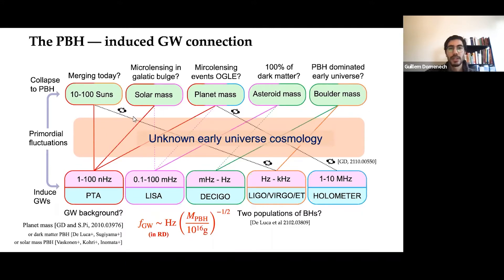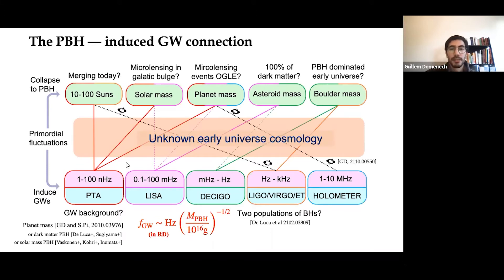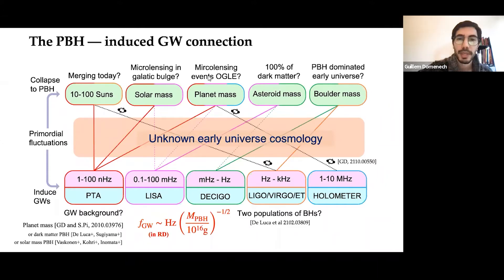But all this connection depends on the unknown early universe cosmology. For example, focusing on the possible background seen by pulsar timing arrays, if the universe was dominated by an early matter phase, I have shown with Tsipey that it could explain the planet-mass primordial black holes seen by OGLE. So the connection between GW signals and PBH masses has a strong dependence on the unknown early universe cosmology.